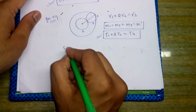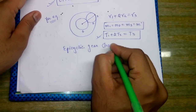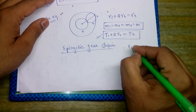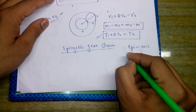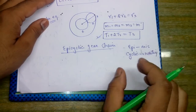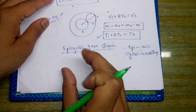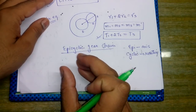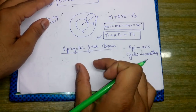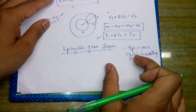Now we will start with the discussion on epicyclic gear trains. If we bifurcate the word 'epicyclic': 'epi' means axis and 'cyclic' means rotating. So apart from the rotation of the gears, if any gear's axis is also rotating with respect to some other axis, then the gear train is known as an epicyclic gear train. It may be a simple, compound, or reverted epicyclic gear train.